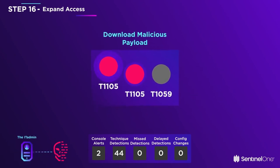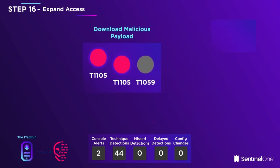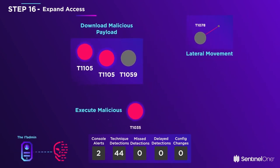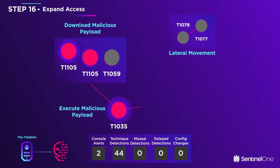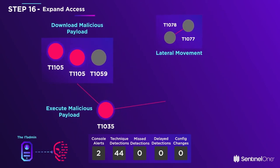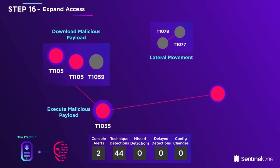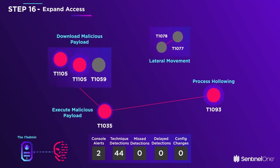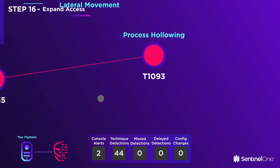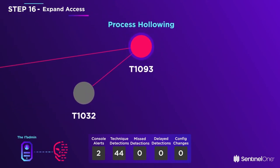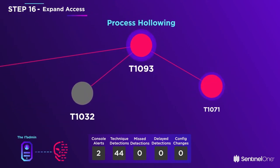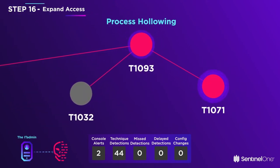The attacker then pivots attention to the IT admin computer, makes an SMB connection to it, and executes a technique called process hollowing in order to harness portions of the remote host's memory for his purposes.